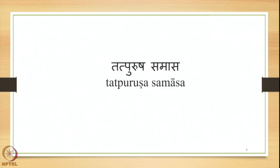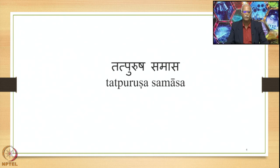We are studying the Tatpurusha Samasa, which is an important type of compound in Sanskrit. There are four types of compounds: Avyeibhava, Tatpurusha, Bahuvrihi, and Dvandva, stated in this particular order in the Ashtadhyayi. The Tatpurusha Samasa is explained with numerous sutras in comparison with the other Samasas, be it the compound prescription sutras, the Samasa-vidhayaka sutras, the Samasanta-pratyaya-vidhayaka sutras, or the Samasa-svara-vidhayaka sutras.